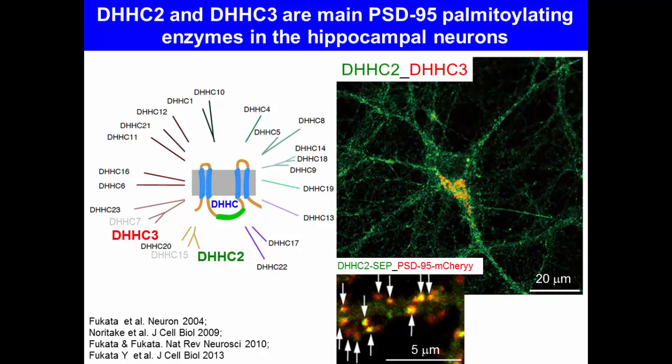We found that DHHC2 and DHHC3 are the main PSD95 palmitoylating enzymes in hippocampal neurons. We also found that DHHC3 is localized at the Golgi apparatus in the cell body. In contrast, DHHC2 is mostly distributed in the dendrites.